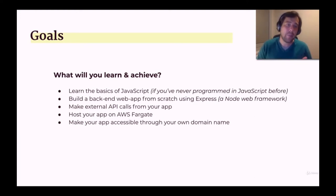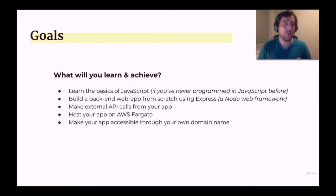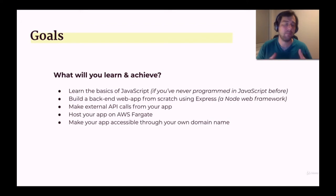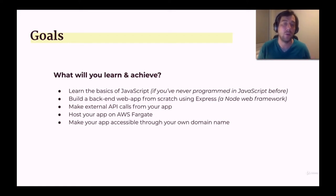Second, you'll learn how to build a backend application using Express, which is a Node.js framework for building web applications. Third, you'll learn how to build a backend application that makes API calls to external APIs. We'll build a very simple web application and then you'll learn how to host it on AWS Fargate. Once set up, AWS will manage everything and you won't need to do any other administration beyond building your application code.